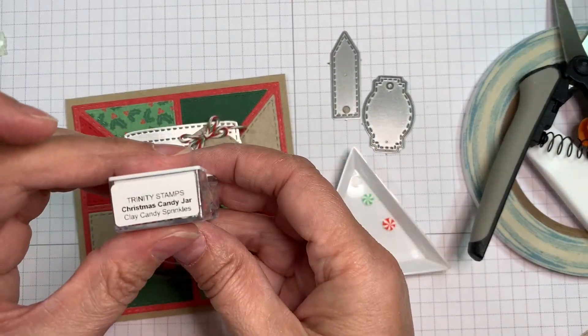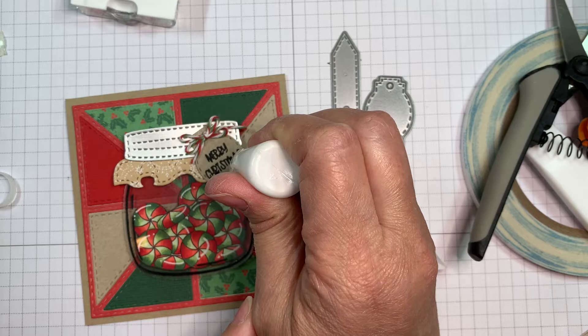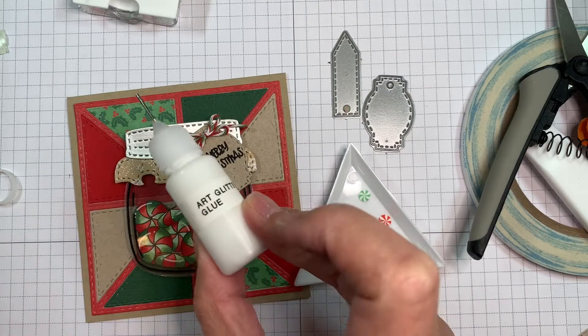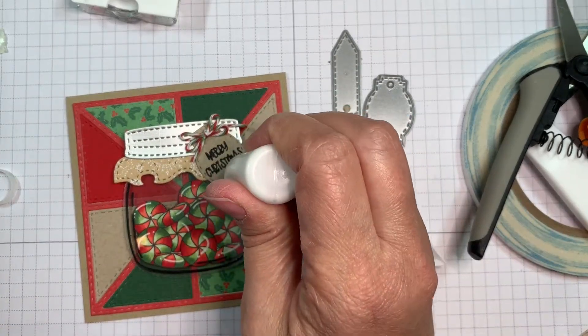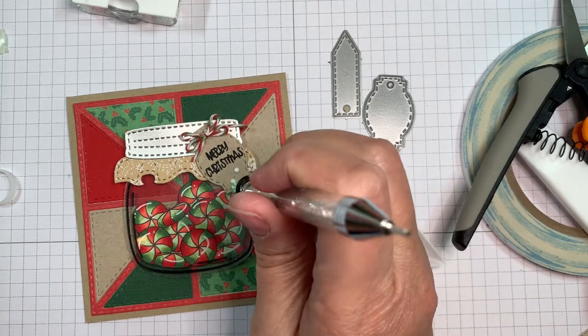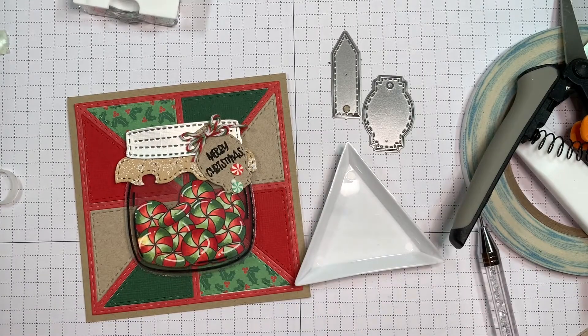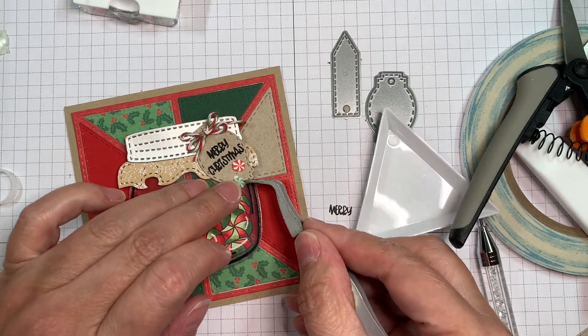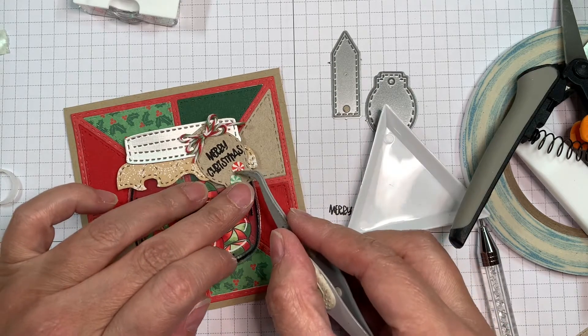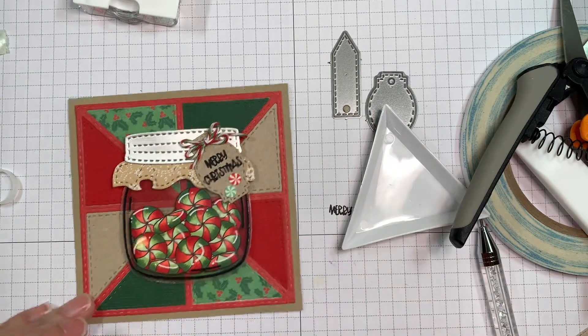So now I'm pulling out Trinity Stamps Christmas Candy Jar Clay Sprinkles. And I'm going to add a few using my Art Glitter Glue. And of course, I had a little clog there. So you see, not everything goes perfectly for me. Here we are. And now I'm using my Studio Katia embellishment wand to stick those on. And you notice, see, I dropped it. It's like, yeah, not everything goes perfect for me. I'm just grabbing my little reverse tweezers to move that up. Aren't those cute little candies? I just thought they were adorable. Perfect for this card because I love these little Christmas candies.